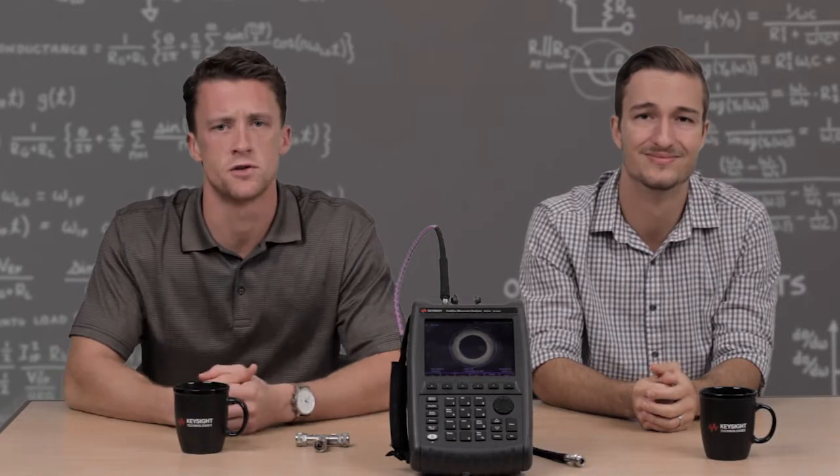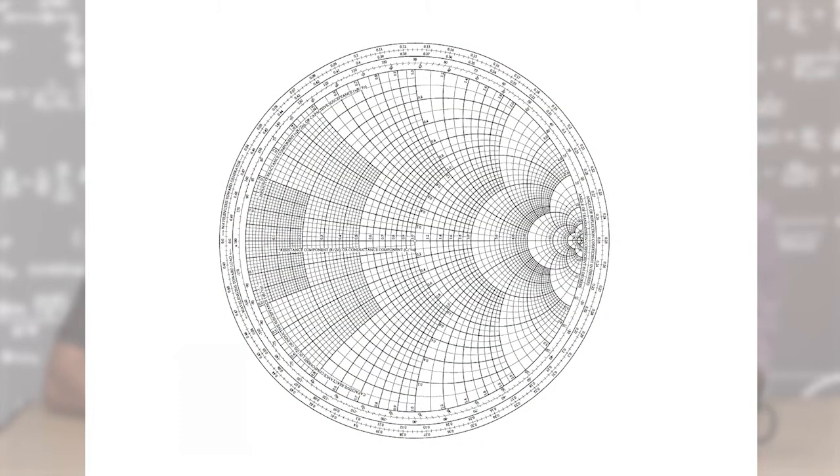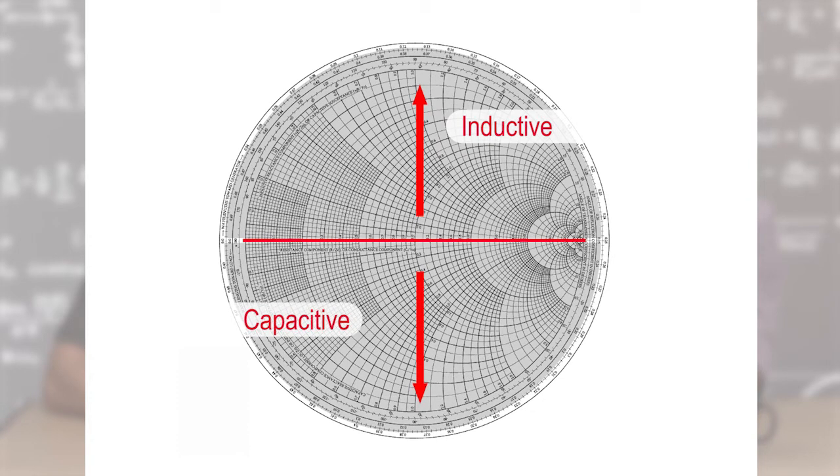Yeah, Smith charts can be used to show all kinds of complex quantities. If we look at a Smith chart for complex impedance, from left to right we have zero ohms going all the way up to infinity ohms. Phase angles that lie above this line represent inductive quantities and phase angles that lie below this line represent capacitive quantities.